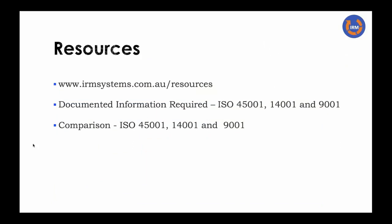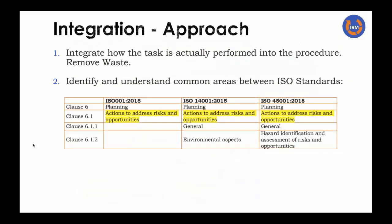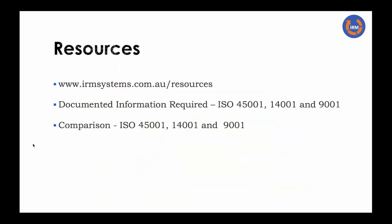Some of the resources on our resources page: we've mapped out all the documented information required — both documents and records — under the three standards ISO 9001, 14001, and 45001, and you're welcome to download that for free. We also have a comparison document that looks at each clause in each standard and what the related requirement is in the other standards. They're useful tools to get you started. Many thanks for that, Andrew. And if you enjoyed that video, click on this link here to see how you can create your own integrated management system manual.